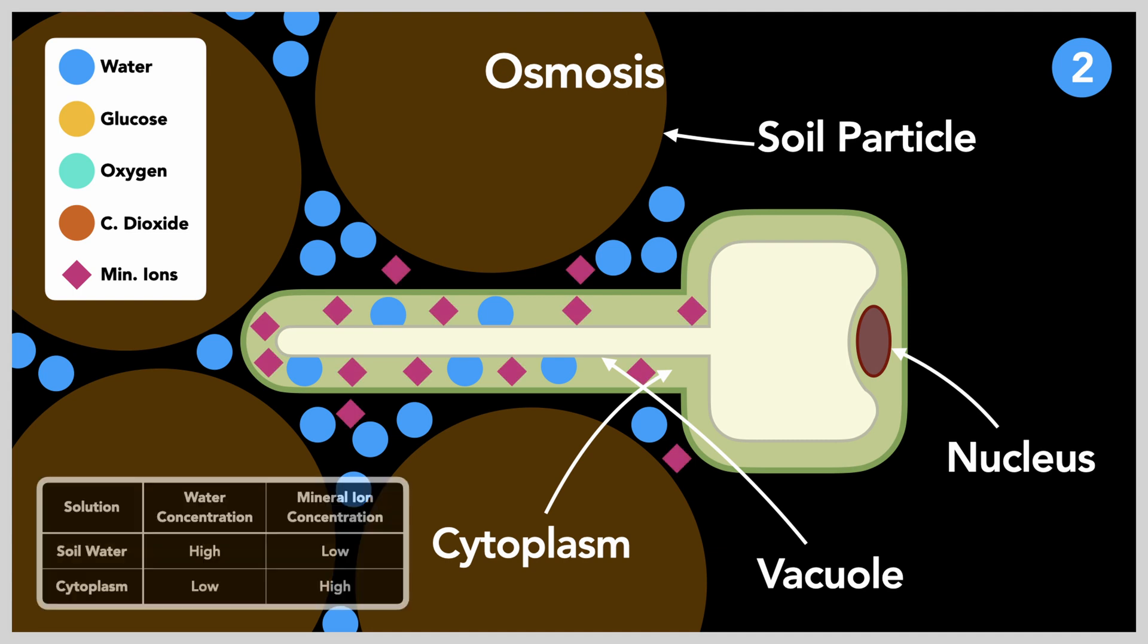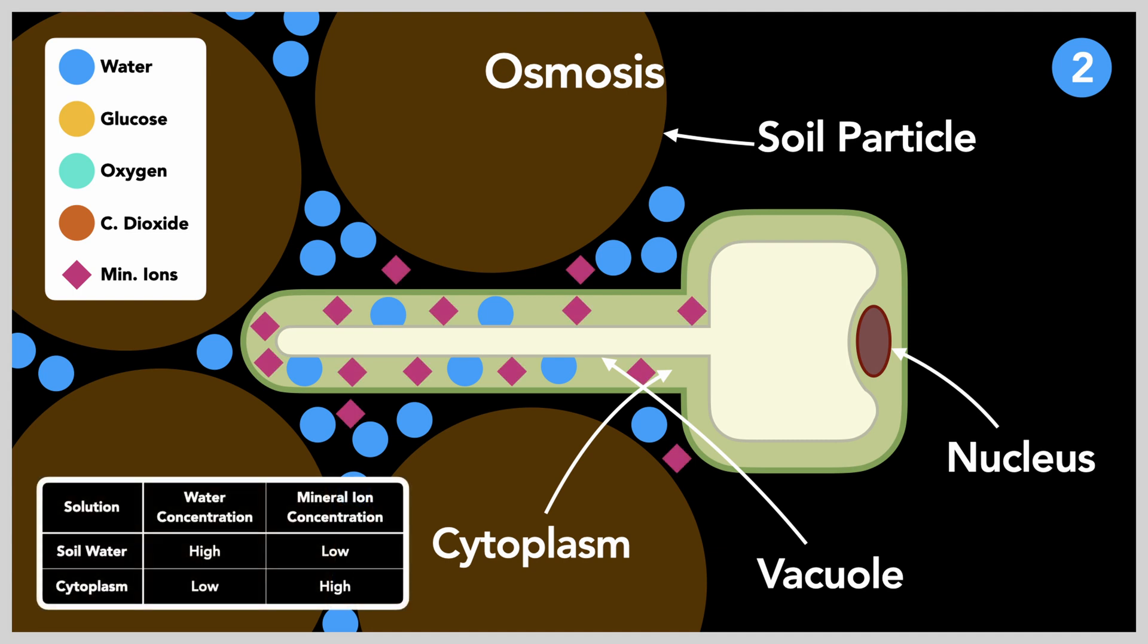This means that the soil water has a higher water potential than the cytoplasm, thus the water molecules in the soil will naturally pass through the cell wall and into the cytoplasm.